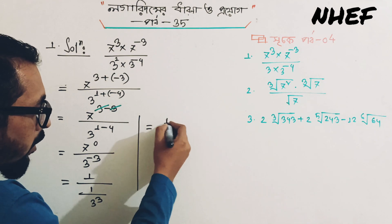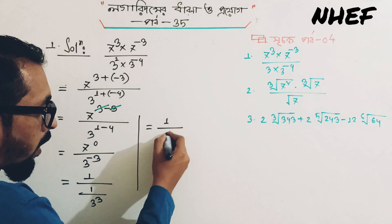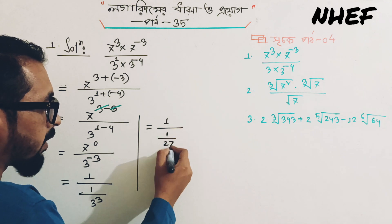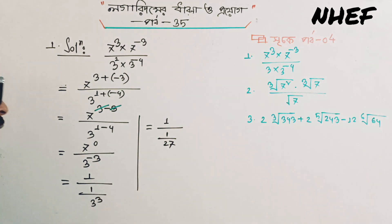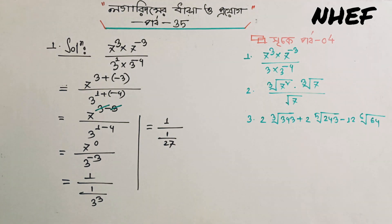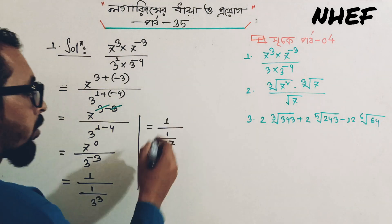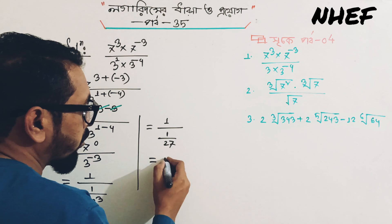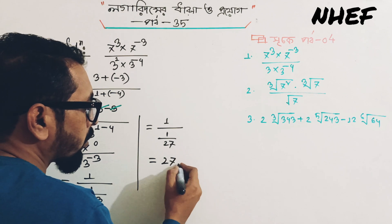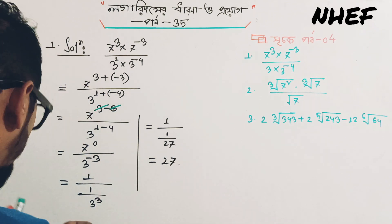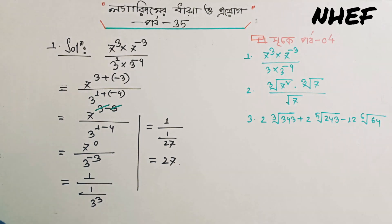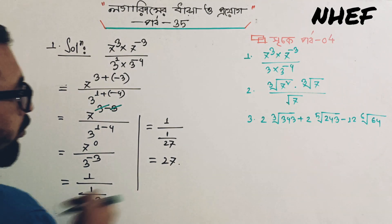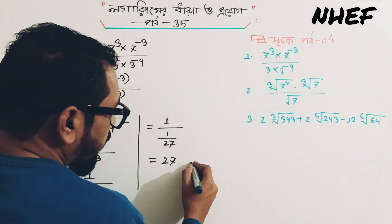So let's see: 7 to the power 0 means 1. 3 to the power minus 3 is 1 divided by 3 to the power 3. So we will write 1 divided 2 into 7, 3 to the power cube minus 27. We will give 1 to the power, to the power 1, to the power 3, to the power 1.